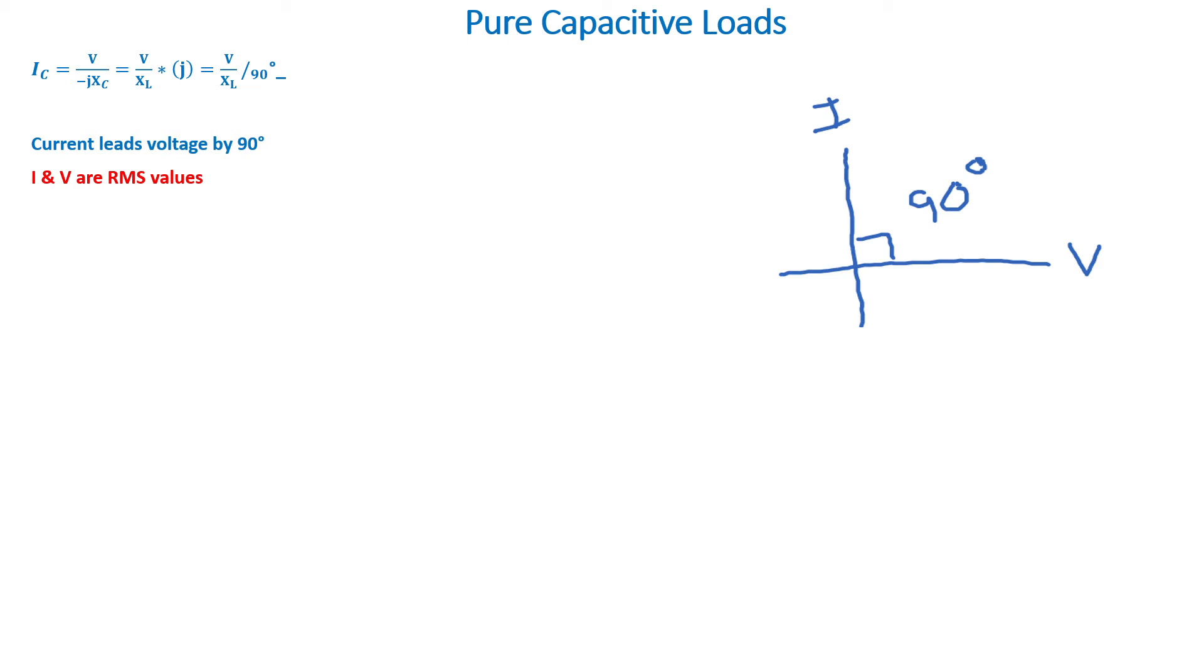Note the current and voltage are RMS values, so usually in AC circuits the subscript RMS is dropped.